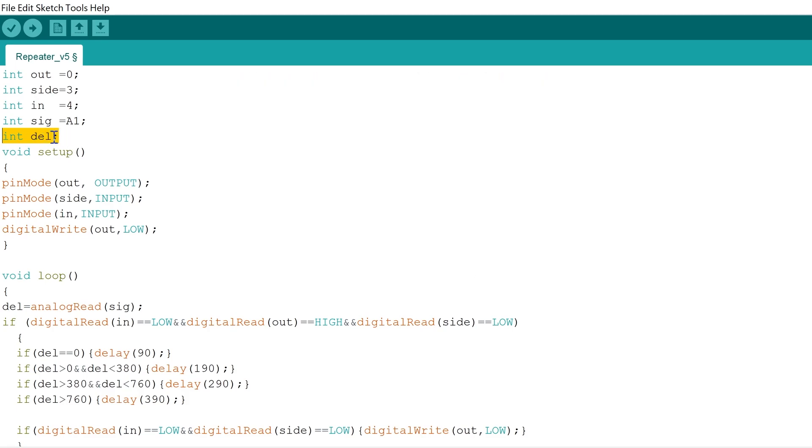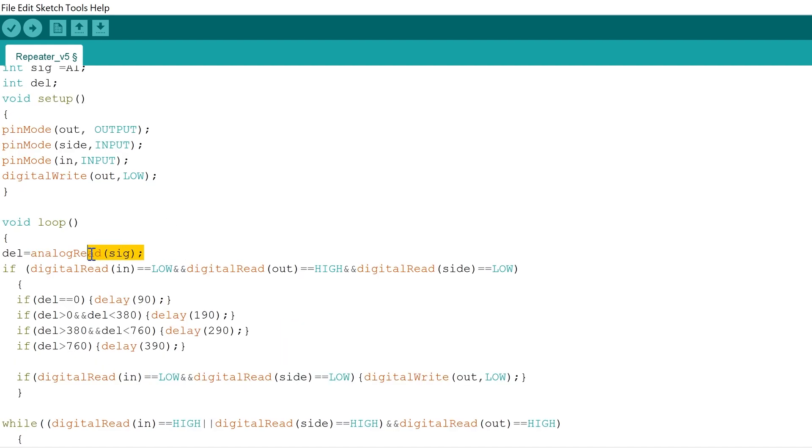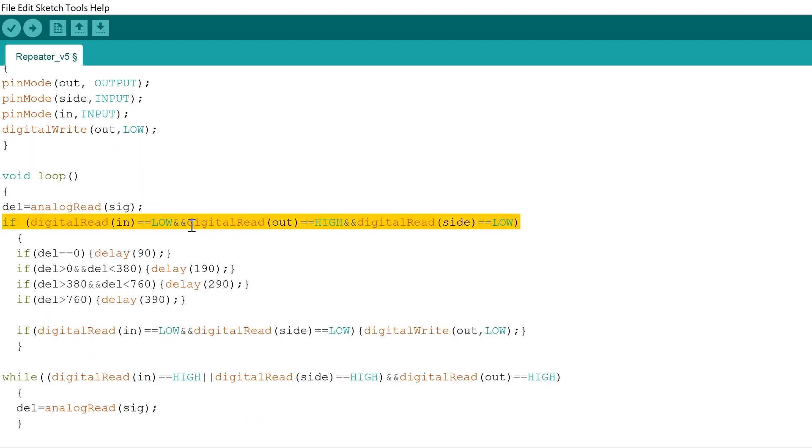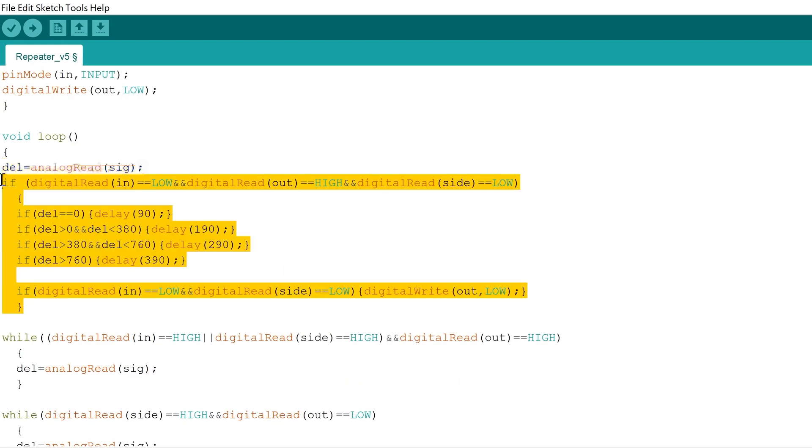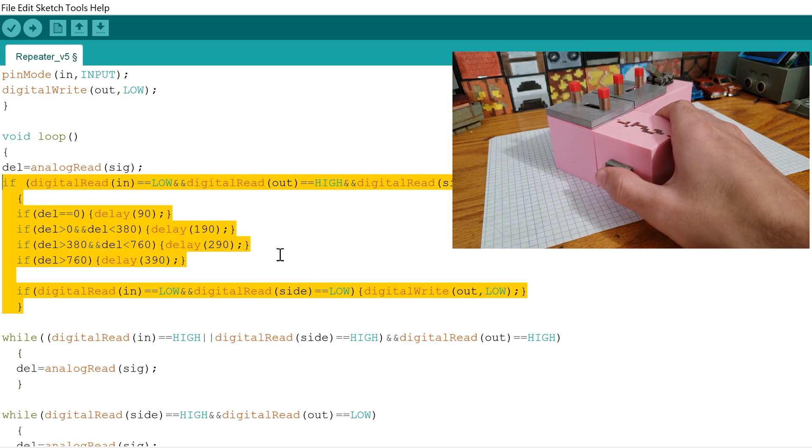In the setup we have out as output, side and in as both inputs. Finally, we have digital write out low just to make sure that the LEDs within the repeater are initially off. To start with, we first read the potentiometer. After is the first if statement. This if statement is responsible for turning off the repeater. It's saying that if the repeater is not powered and if the LEDs are on and also if the repeater is not being locked from the side, it'll go through a delay depending on what the delay is set as.